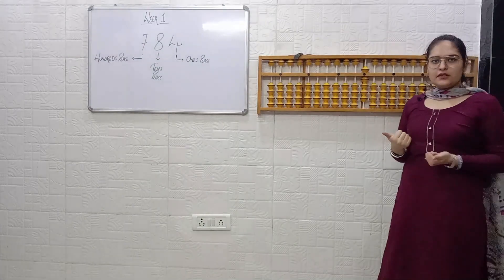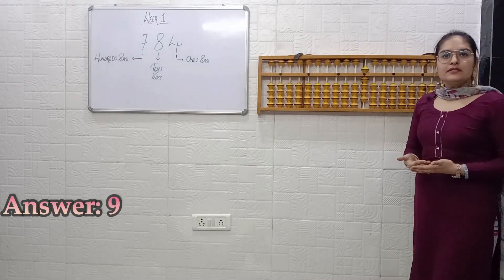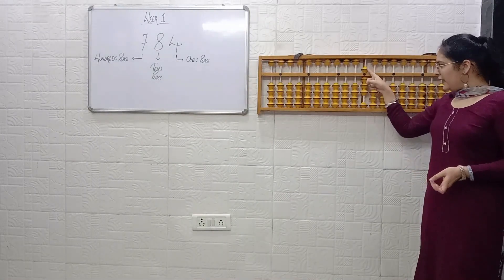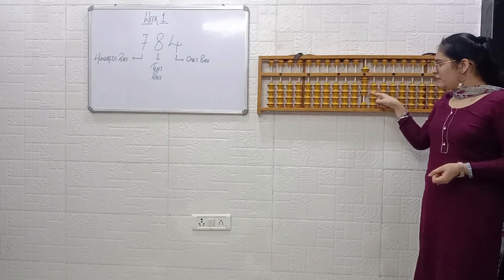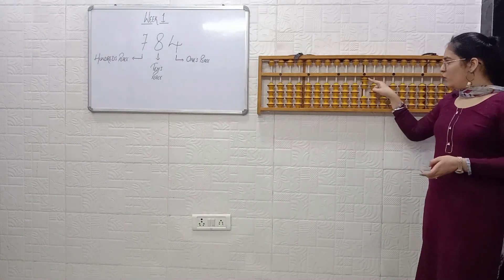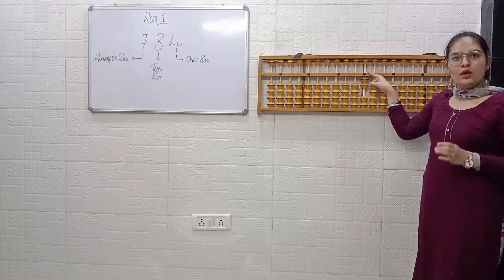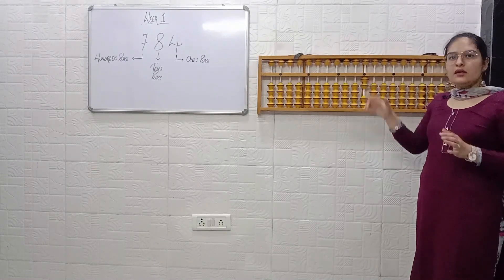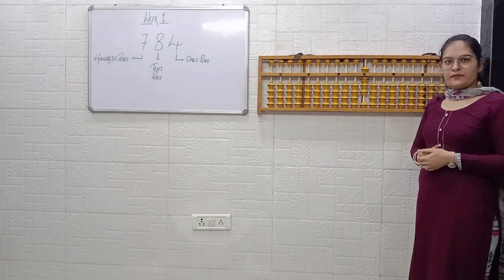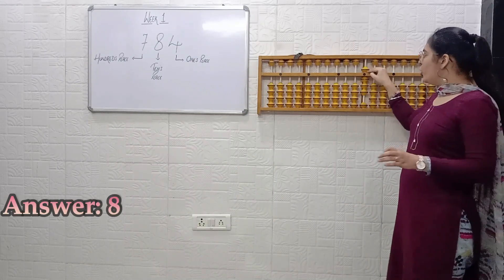Next — tell me the answer: 5, 6, 7, 8, 9. Answer is 9. Next: 5, 6, 7, 8. Answer is 8. Now here the Heaven bead is not touching the value bar, so we will not read 5. We count just those beads touching the value bar: 1, 2. Answer is 2. Next: 5, 6, 7, 8. Answer is 8.